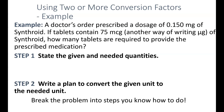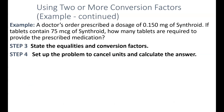In this example, a doctor's order prescribed a dosage of 0.150 milligrams of Synthroid. If tablets contain 75 micrograms — MCG is the same as micro — of Synthroid, how many tablets are required to provide the prescribed medication? We'll go through our same steps as for a one-step conversion: identify the given and needed quantities, write a plan to convert the units, and break the problem into steps you know how to do. Many people try to skip directly to setting up the problem, and that can get you into trouble.